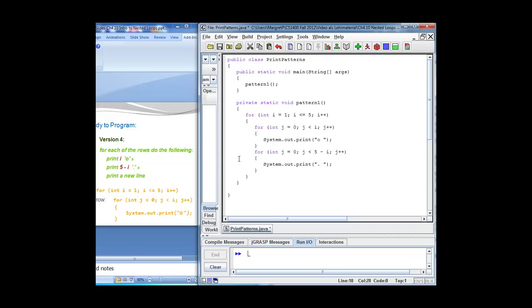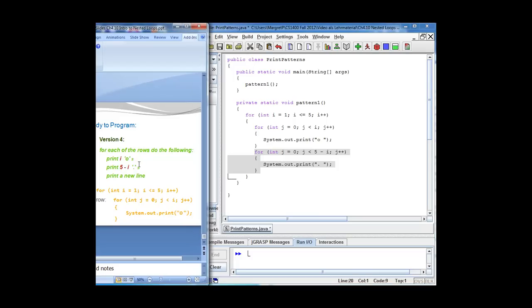One thing I want to point out is that I can use j again. The reason is, j was declared in my for loop and right here, when the first for loop terminates, j goes out of scope. So there is no j at this point, and I can declare my next control variable once again with the name j. So at this point, we were printing our circles, we were printing our dots.